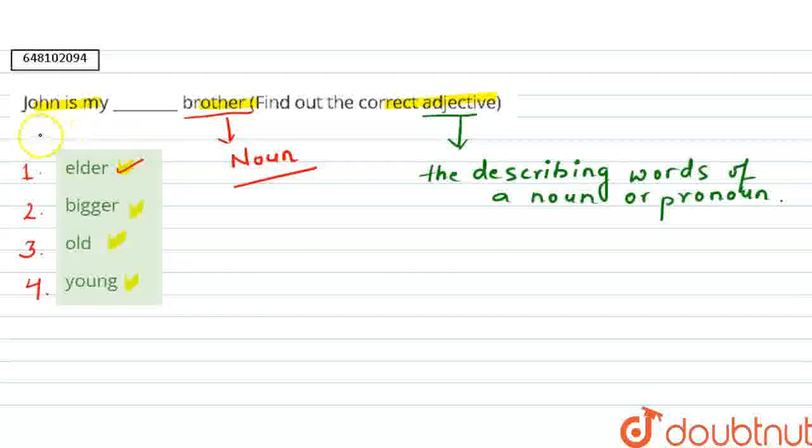First is elder. John mera bada bhai hai, John is my elder brother. Elder ka matlab hota hai, the one who is elder to you, matlab age mein. Jo aap se age mein bada ho, aap usko elder bolte hain.